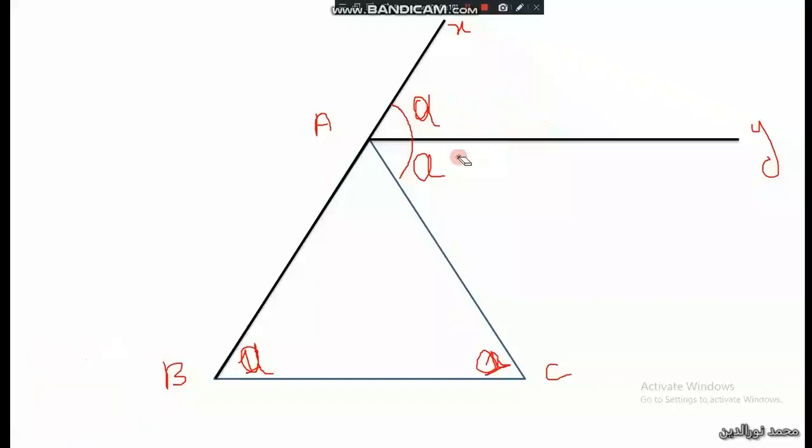So now the question is to prove that the two lines AY and BC are parallel. I can work with corresponding angles or alternate angles. I see here the letter Z shape, so I observe that two alternate angles are equal—this angle and this angle. Then the two lines AY and BC are parallel.